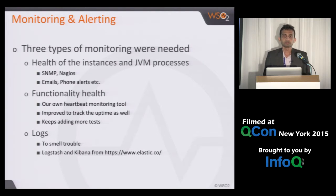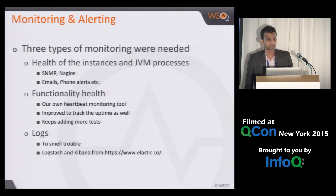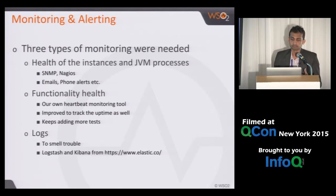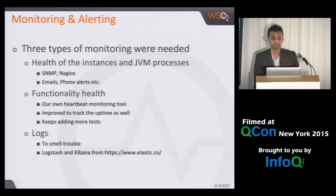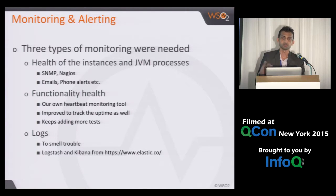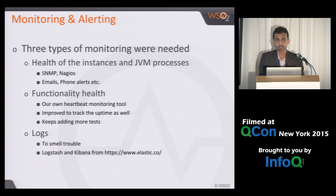When the deployment was growing, we needed monitoring and alerting. Initially, the DevOps team set up SNMP and Nagios. In their dashboard, you can see instances with their CPU, memory consumption, disk usage, etc. They also configured email, phone alerts, and SMS — so if something goes wrong, they get notified. But that was not enough. Sometimes an instance and its port might be up and running, memory and CPU might be fine, but due to some reason certain functionality might have broken — for example, users might not be able to create an API.